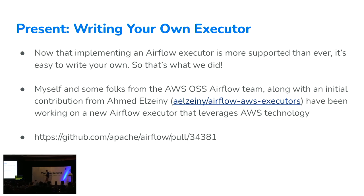Another benefit is that it's now easier and more supported than ever to write your own executor. That's what my team at Amazon did — we're working on a new executor, with initial contributions from Ahmed. His repository has a list of AWS executors, which was a great starting point. We took that, made a bunch of improvements, and AIP 51-ified everything. The pull request is in review right now — PR 34381 — if you want to get involved or leave feedback.